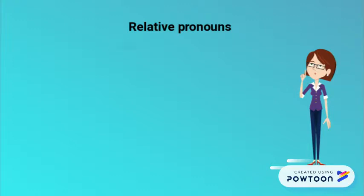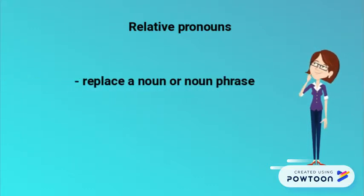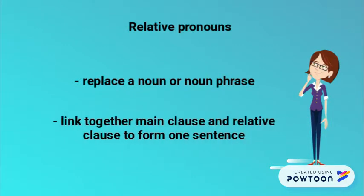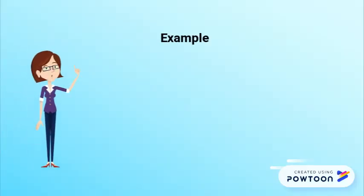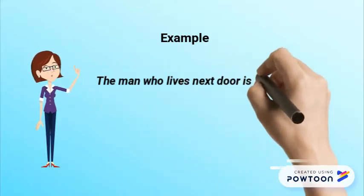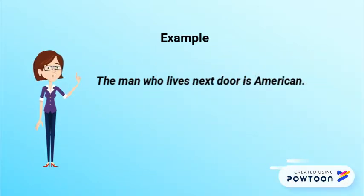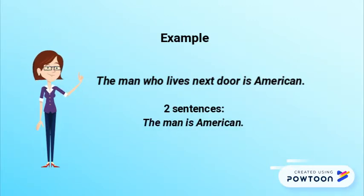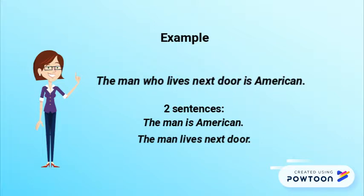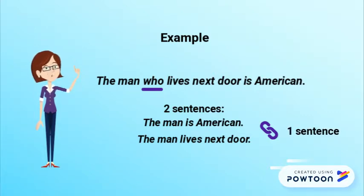Relative pronouns are used in different clauses called relative clauses. Their particularity is that not only do they replace a noun or noun phrase from the main clause, but they also link together the main clause and the relative clause to form one sentence. For example: 'The man who lives next door is American.' Imagine two sentences: 'The man is American' and 'The man lives next door.' With the relative pronoun 'who', I have connected them into one sentence and avoided repetition.